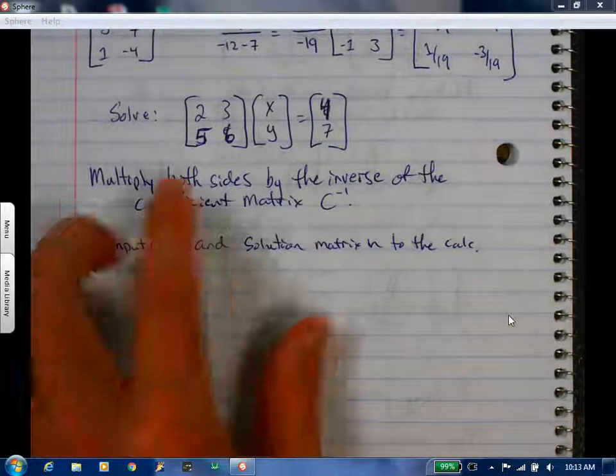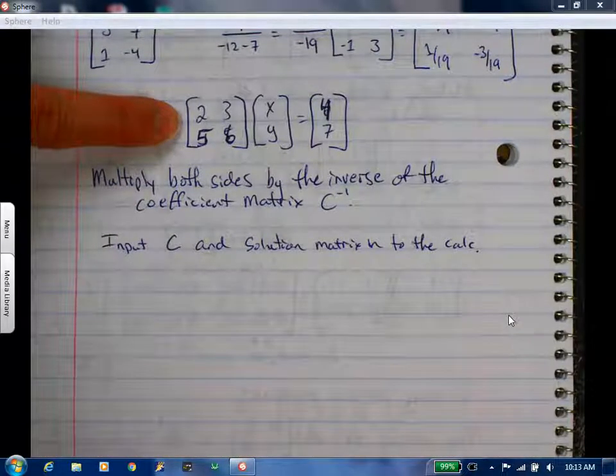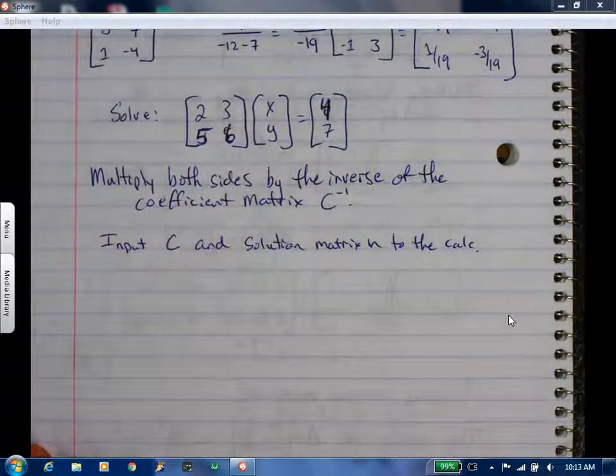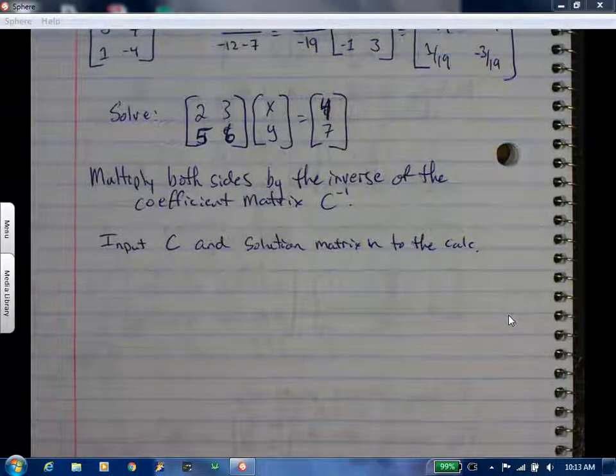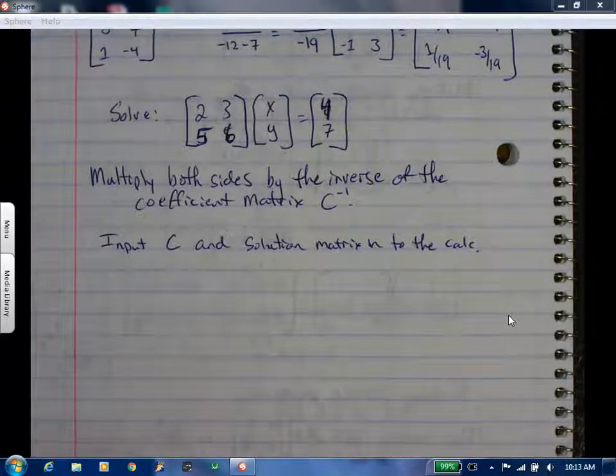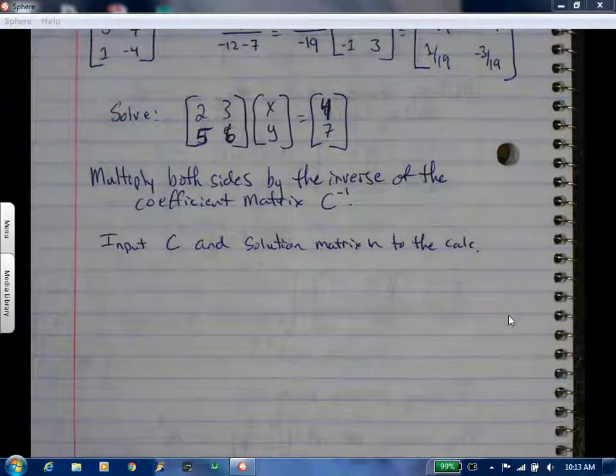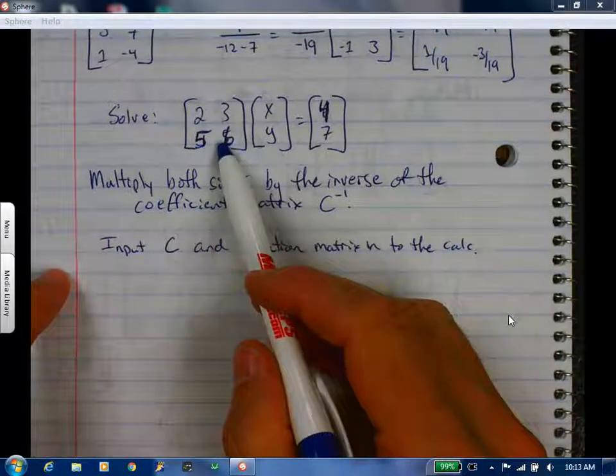If I take this matrix times this inverse, what should it equal? Two inverses put together equals the 1, 0, 0, 1, the identity matrix. Which is what we want. We want the identity matrix on this side.